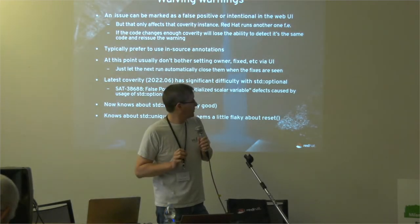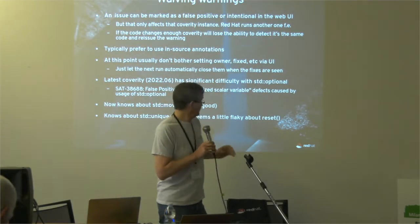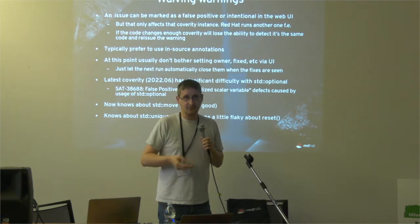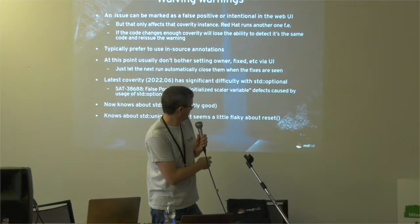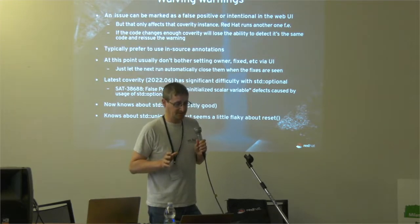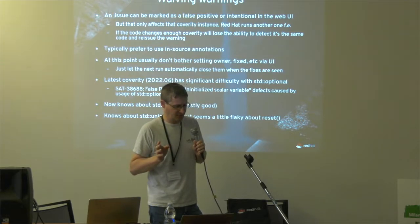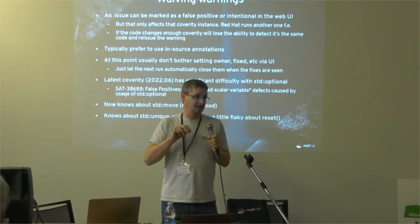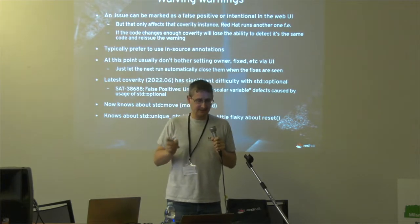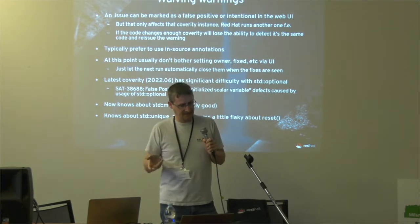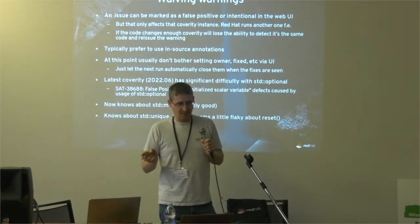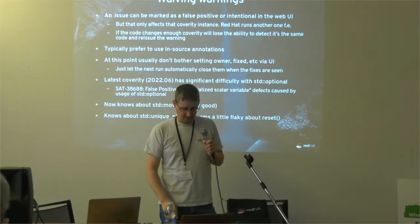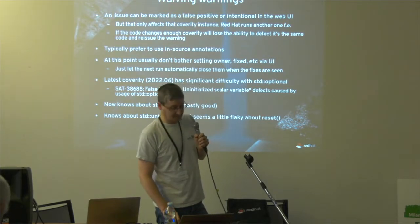There were new categories of warnings that Coverity found which are useful to us. It knows about std::move — it knows that after you use std::move, what's left behind is effectively uninitialized or zeroed and needs to be checked. It also knows about std::unique_ptr, though it's not great about it — it finds some issues but often brings in more noise. For remaining defects, we annotate inline false positives, because in Red Hat we run a second Coverity instance not connected to the public one, so inline annotations mean I don't have to mark them twice.